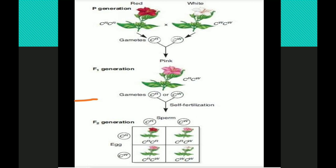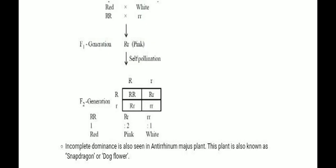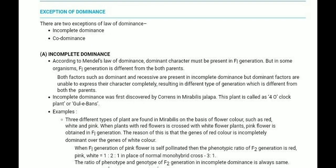For example, the red flower has the genotype CRCR and the white flower is CWCW. If you cross the red flower with the white flower, the F1 generation produces a pink flower. Both dominant and recessive factors are present, but the dominant factor is unable to express its character completely, resulting in a different type of generation which is different from both parents.